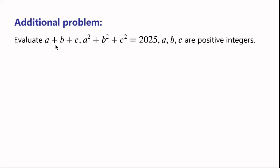Now we have an additional problem. Evaluate A plus B plus C, given that A squared plus B squared plus C squared equals 2025, where A, B, C are positive integers.